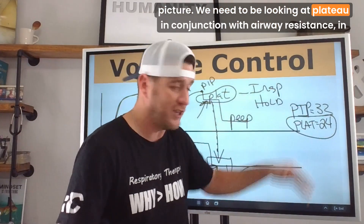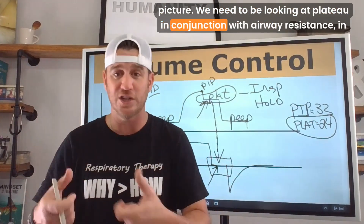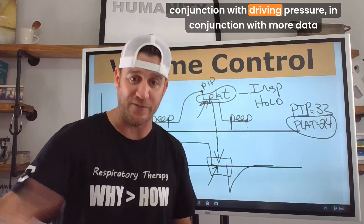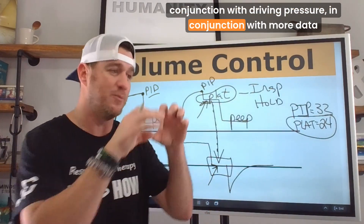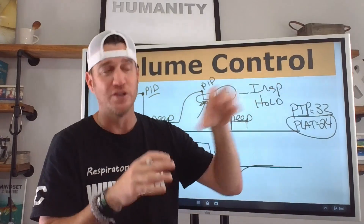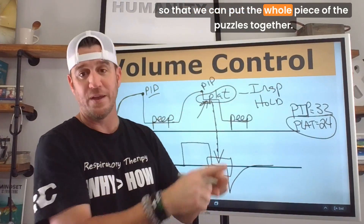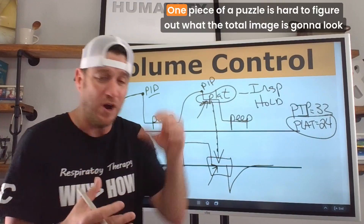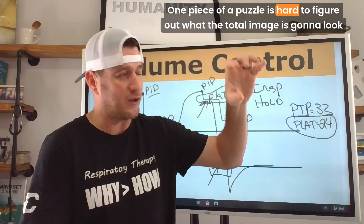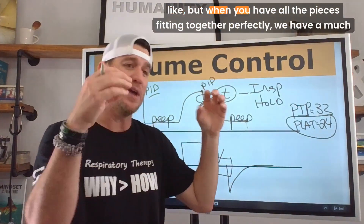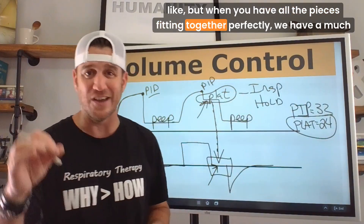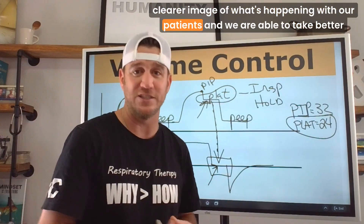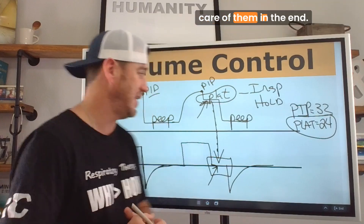We need to be looking at plateau in conjunction with airway resistance, driving pressure, and more data points so that we can put the whole puzzle together. Plateau pressure is just one piece of the puzzle — it's hard to figure out the total picture from one piece alone. When all the pieces fit together, we have a much clearer image of what's happening with our patients and we're able to take better care of them.